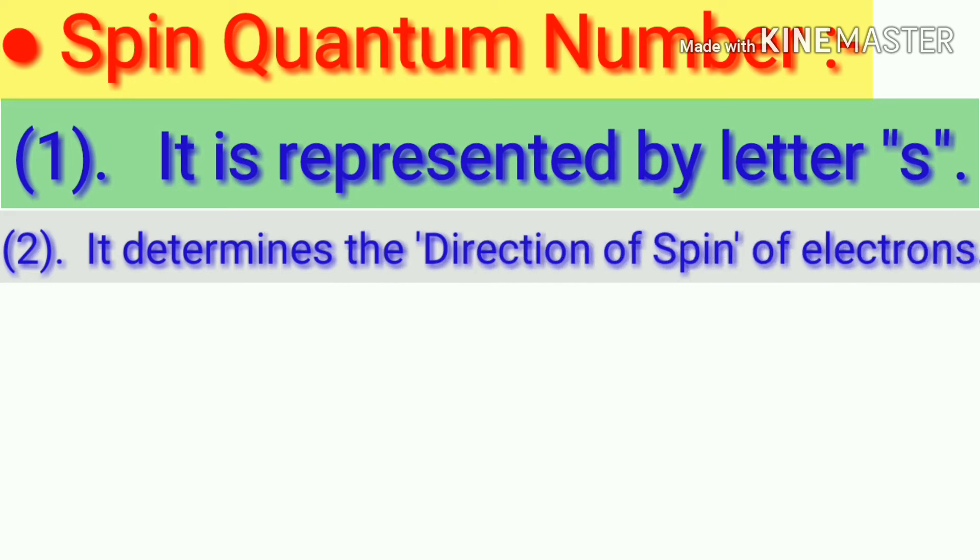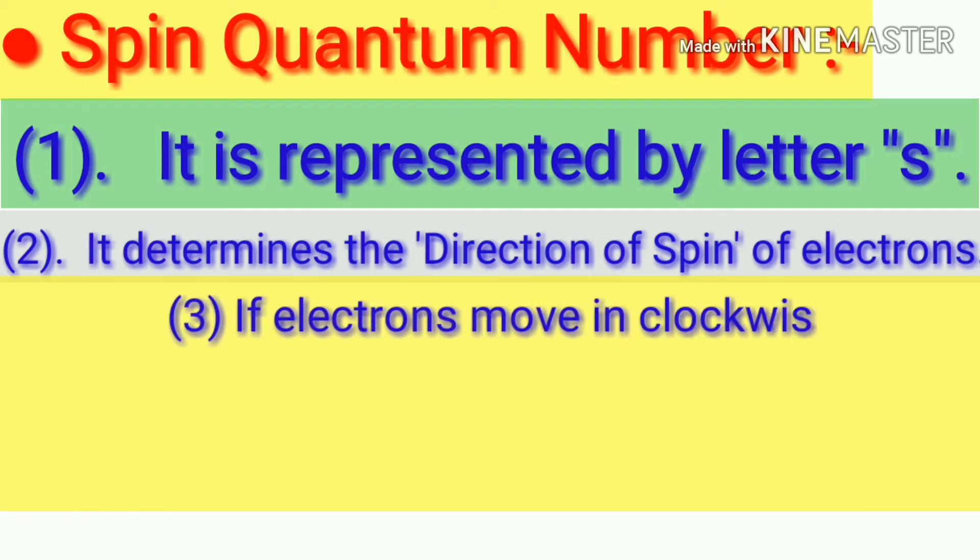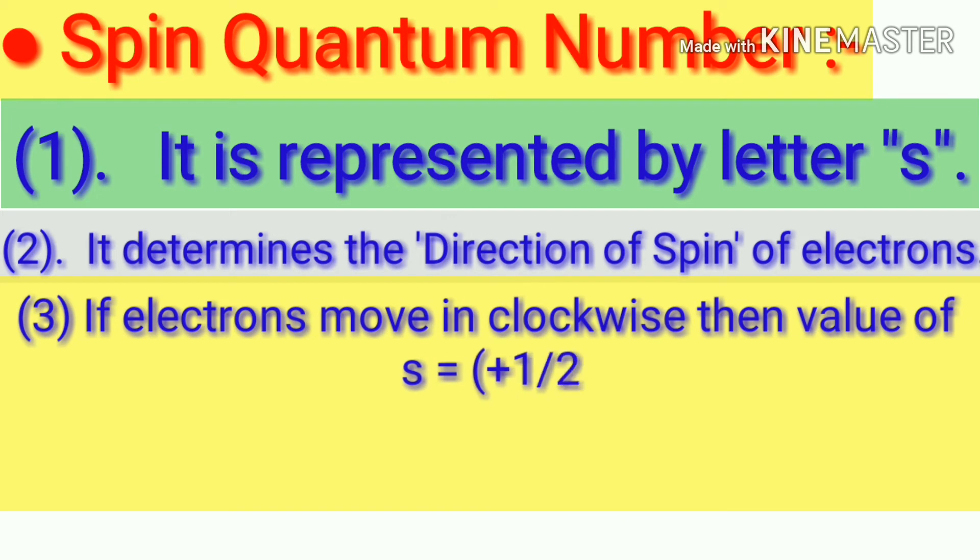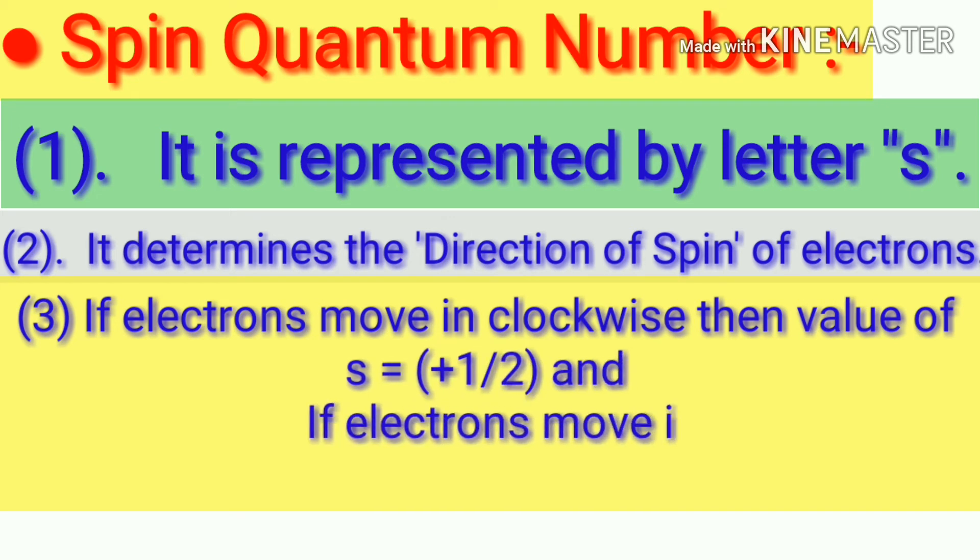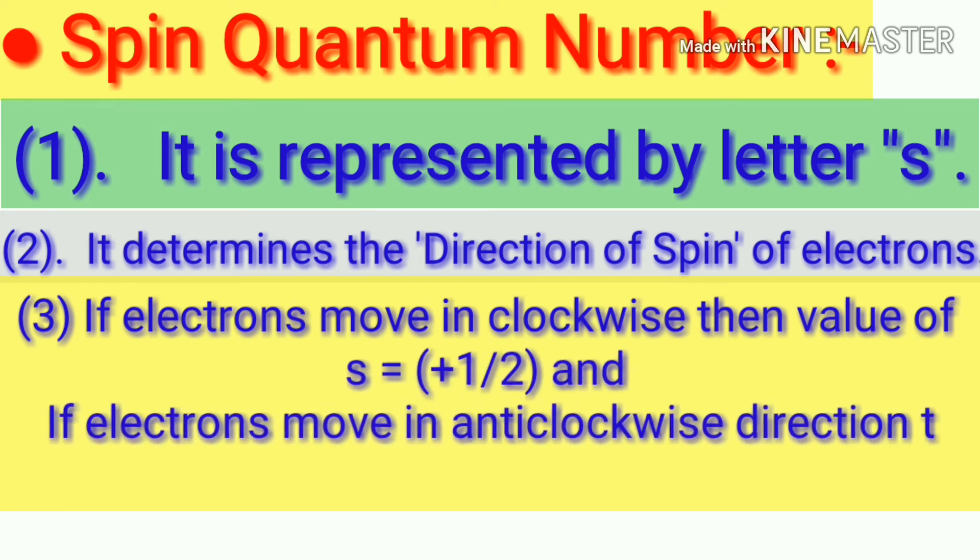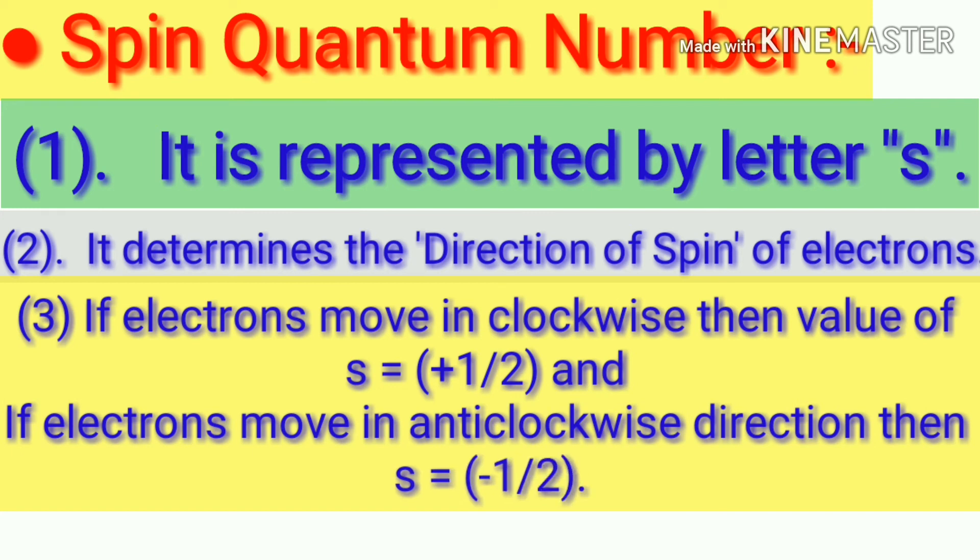Now let's move towards the fourth type of quantum number, that is spin quantum number. It is represented by letter S. It determines the direction of spin of electrons. If electrons move in clockwise, then value of S equals +1/2. And if electrons move in anticlockwise direction, then S equals -1/2.